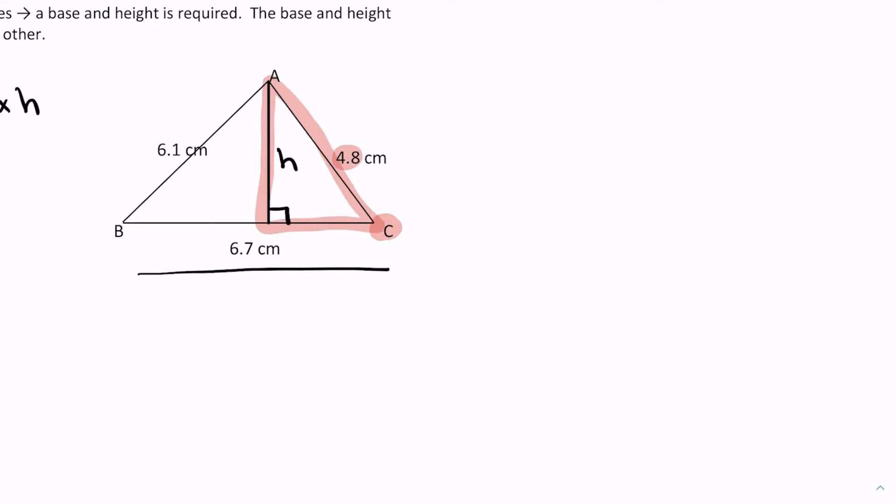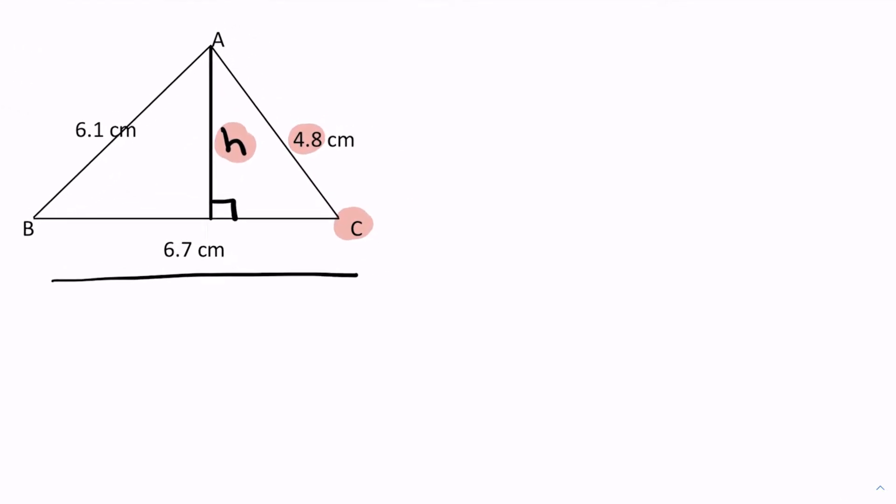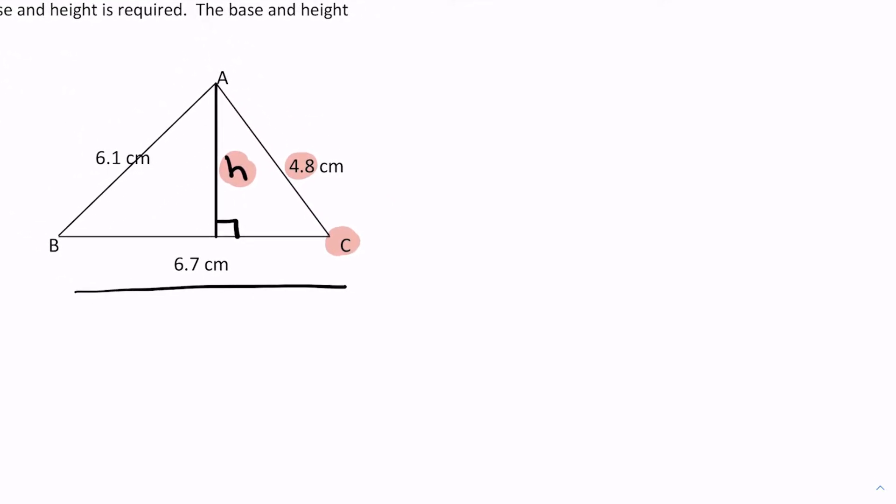And basically I can find the height using SOHCAHTOA and then plug it into my formula. Because in this formula remember we have the base, a half is a half, all we need is the height and once we find that from previous calculations we got our area. So let's solve for angle C using the cosine law for angles.